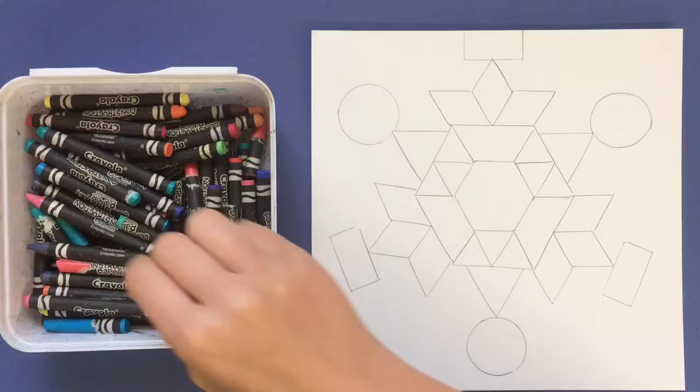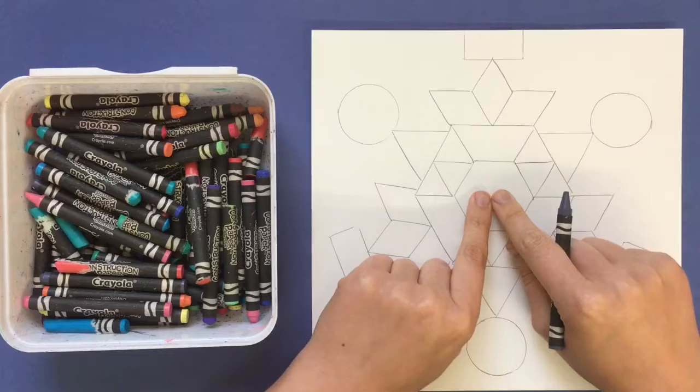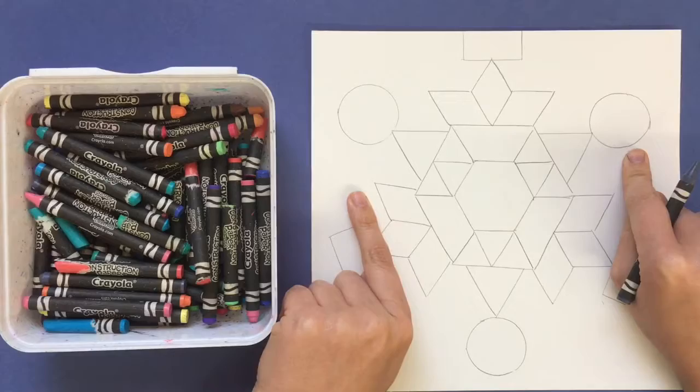Today you're going to be coloring in your mandala using crayons, and we want to start by coloring in at the middle and then working our way out, the same way we did with drawing. We started by drawing in the middle and then we worked our way out.